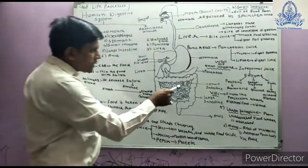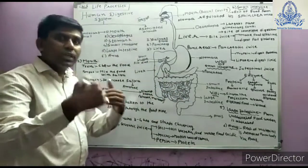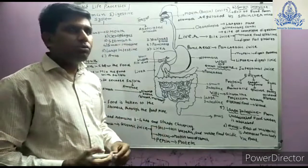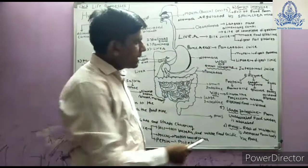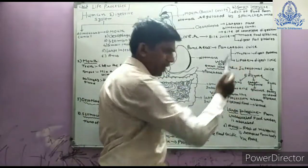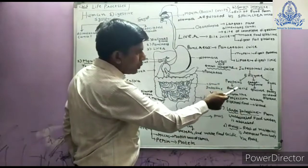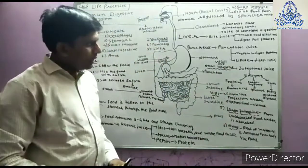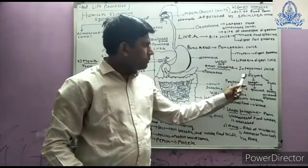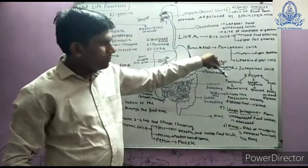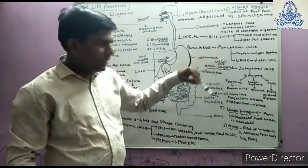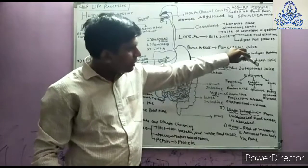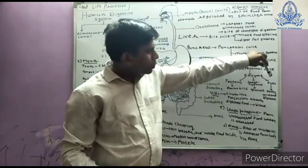Additionally, the wall of the small intestine also secretes juice called intestinal juice, which contains enzymes. These enzymes digest protein, carbohydrates, and fats. Specifically, these enzymes digest protein into amino acids, carbohydrates into glucose (simple sugar), and fats (lipids) into fatty acids and glycerol. So the intestinal juice contains three types of enzymes: proteolytic enzymes digest protein into amino acids, another enzyme digests carbohydrates into simple sugar (glucose), and another digests lipids into fatty acids and glycerol.